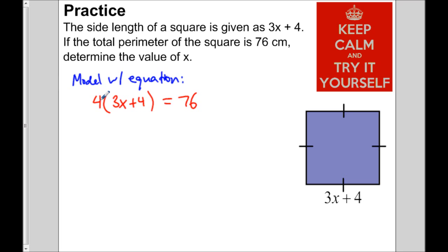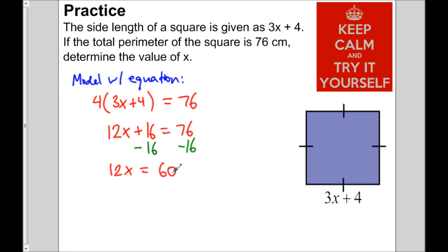We can distribute the 4: 4 times 3x is 12x, plus 16 equals 76. Subtracting 16 from both sides gives 12x equals 60. Dividing both sides by 12 gives x equals 5. If the question was asking for the side length, you'd replace x with 5: 3 times 5 is 15, plus 4 is 19.